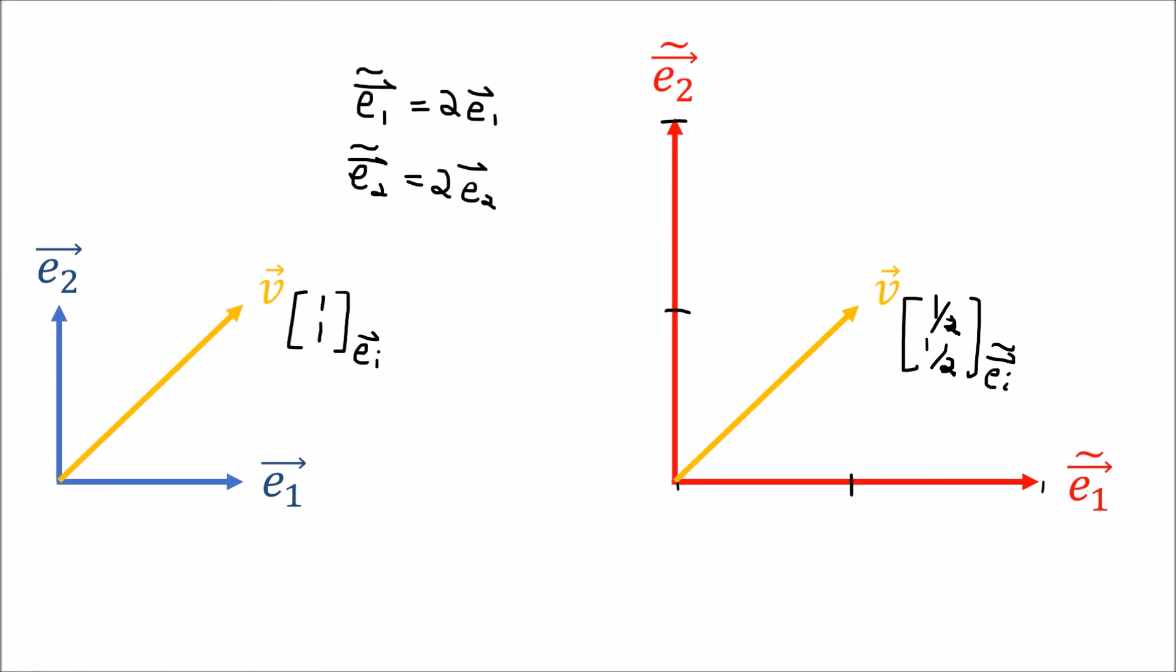And this makes a lot of sense, because even though V doesn't change—V is invariant—V looks smaller when we measure it using the new basis vectors, because the basis vectors, the measuring sticks that we're using, got twice as big.